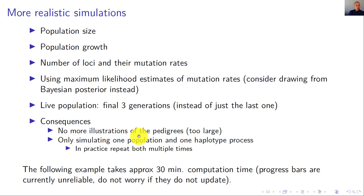That was a brief demonstration of the basic functionality of Malan. Now I want to make a more realistic simulation, which means significantly increasing the population size, introducing population growth, using more loci with realistic mutation rates — specifically maximum likelihood estimates — and using the live population (final three generations instead of just the last one). As a consequence, the pedigrees are too large to illustrate.